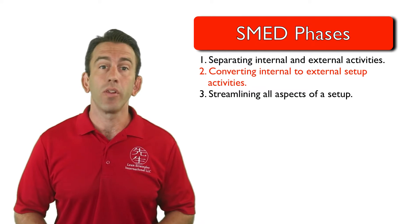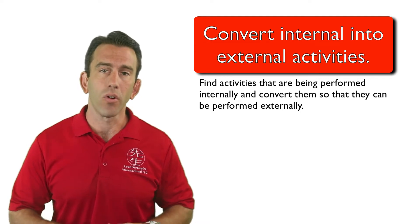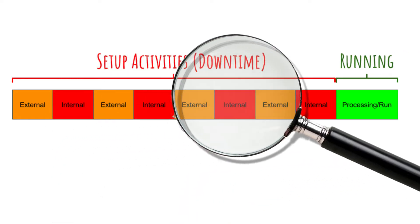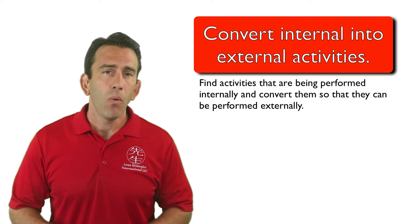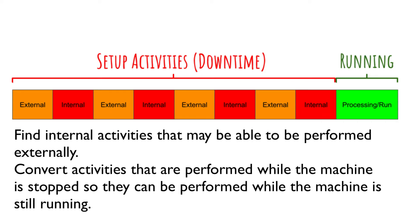In this video, we will introduce the second stage — converting internal setup activities into external activities. Once you have identified and separated both internal and external setup activities, you can go back and look at the value stream closely again. In this phase, you are looking to find internal activities that may be able to be performed externally — activities performed while the machine is stopped — and finding ways to perform these activities while the machine is still running.